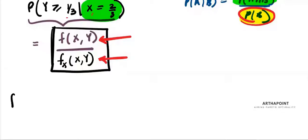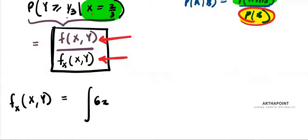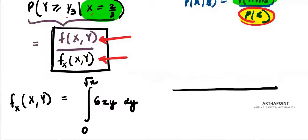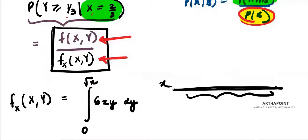The marginal function f_X(x) — how do we find it? We integrate 6xy dy for all values of y. Y is going to range from 0 to root x. We take all possible values of y for a given x and add them together to get the probability of x as a whole.